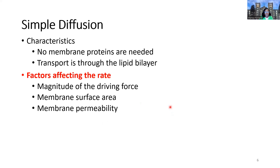Simple diffusion has no membrane proteins needed. Transport goes straight through the lipid bilayer, so these particles must be able to go through the phospholipid bilayer — in other words, they must be nonpolar. We think of this as easy movement down the concentration gradient that does not require any proteins.